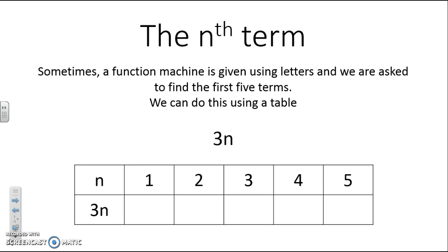So n is the term, so it's the position of the number in the sequence. When n is one, we're looking for the first term of the sequence. Now I want 3n, and when I've got a number next to a letter like that, it means that I'm timesing them together. So 3n is 3 times n. So all I have to do to find 3n is do 3 times 1, which is 3.